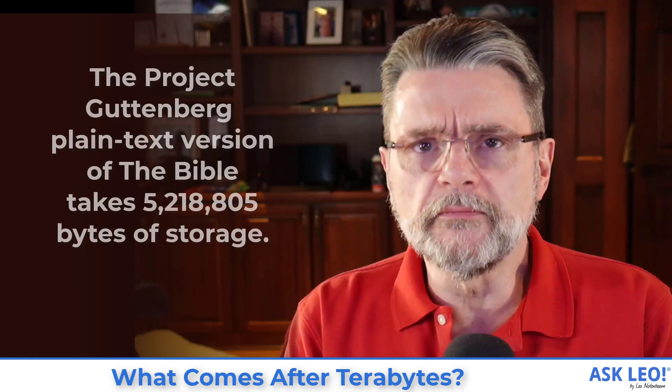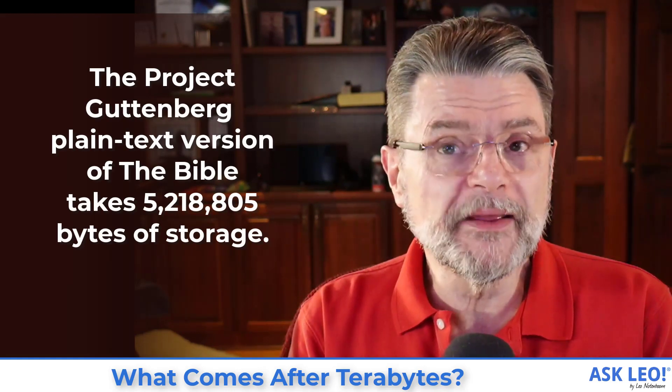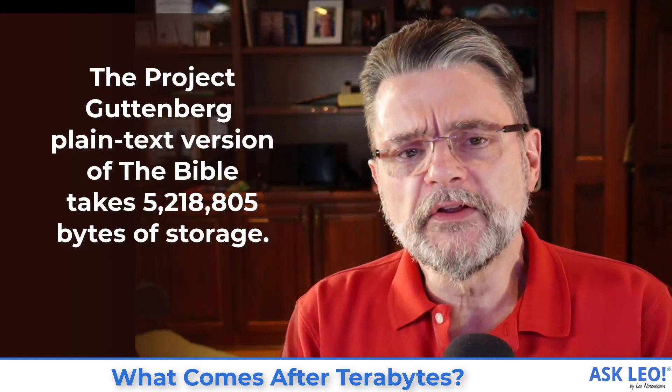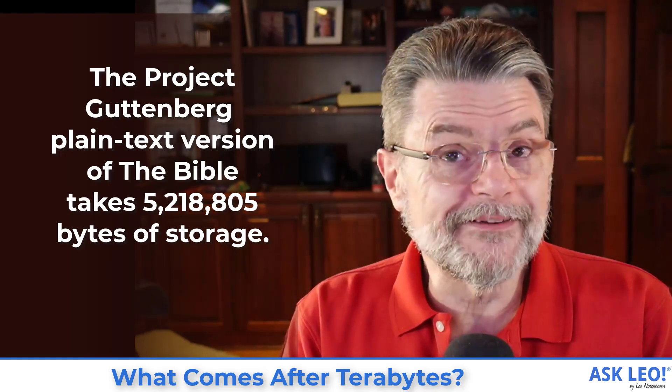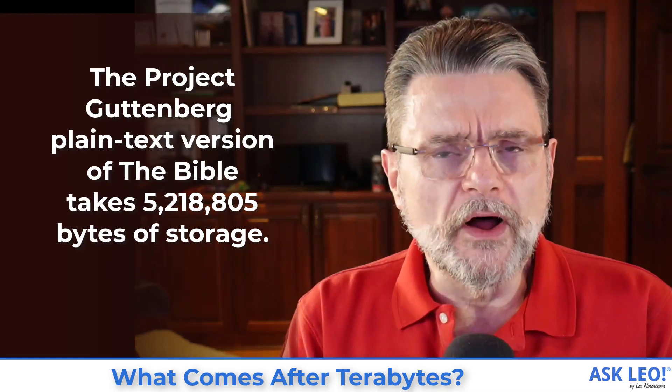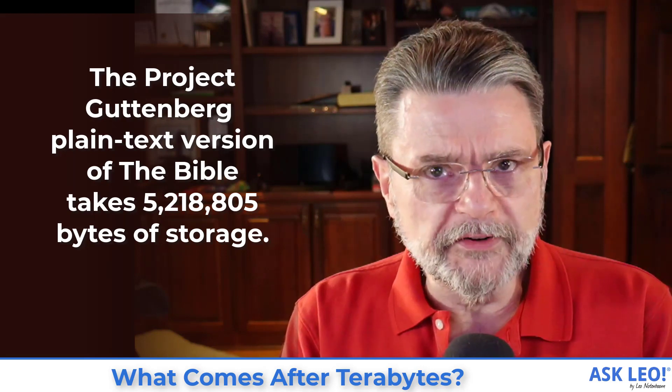Another measure: the Project Gutenberg plain text version of the Bible is 5,218,805 bytes long, something we will often refer to as a megabyte, which is our first term here. We often talk about kilobytes, which are 1,024 bytes. A megabyte is 1,048,576 bytes. But before we go too much further down that path, we need to clarify some of the terms we're using and exactly what they mean.